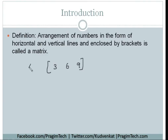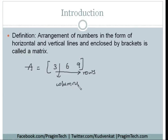Matrices are represented with alphabets. The horizontal lines are called rows and the vertical lines are called columns. In this matrix we have one row and three vertical columns. When these horizontal and vertical lines are represented together, it is called the order of the matrix.